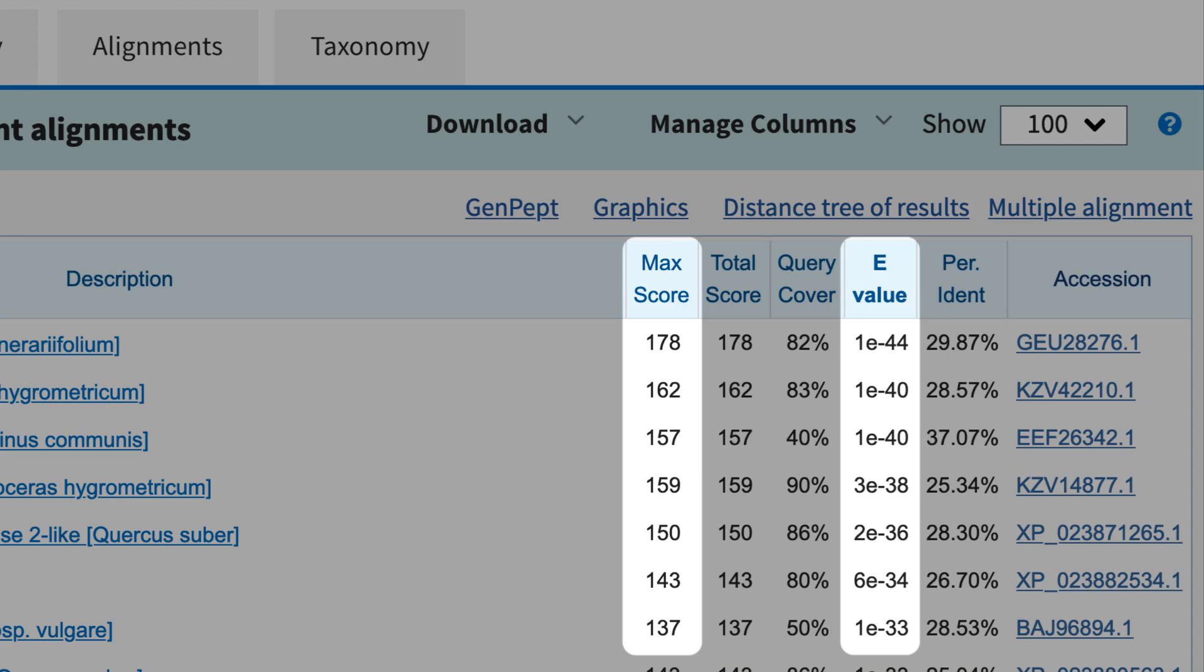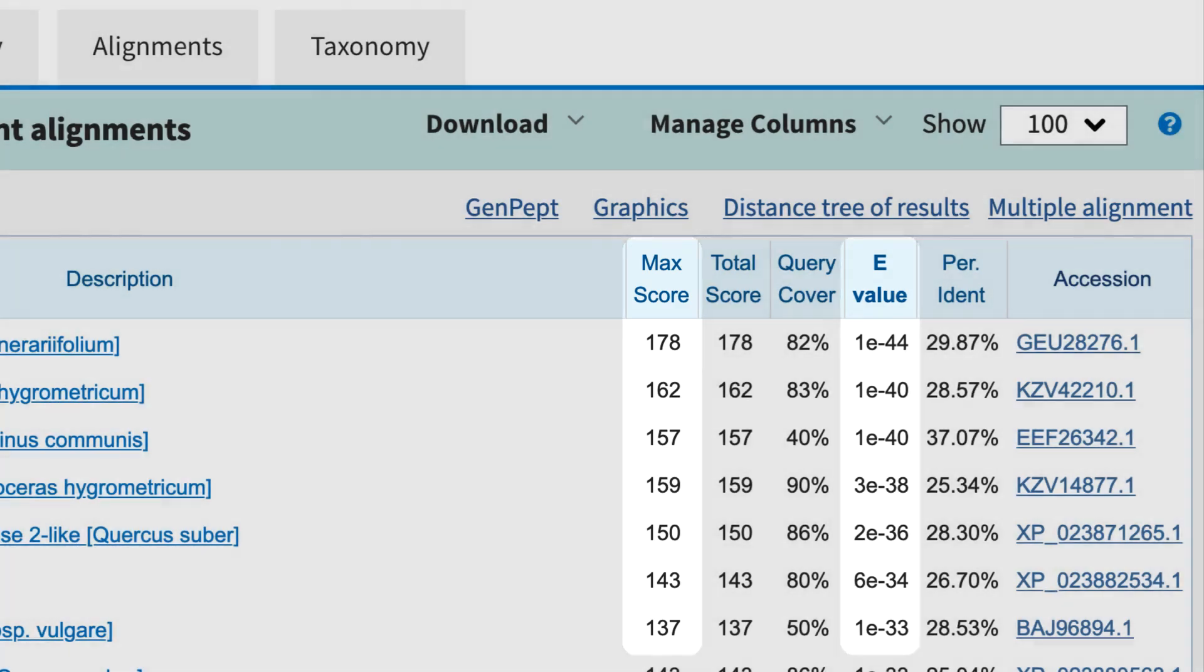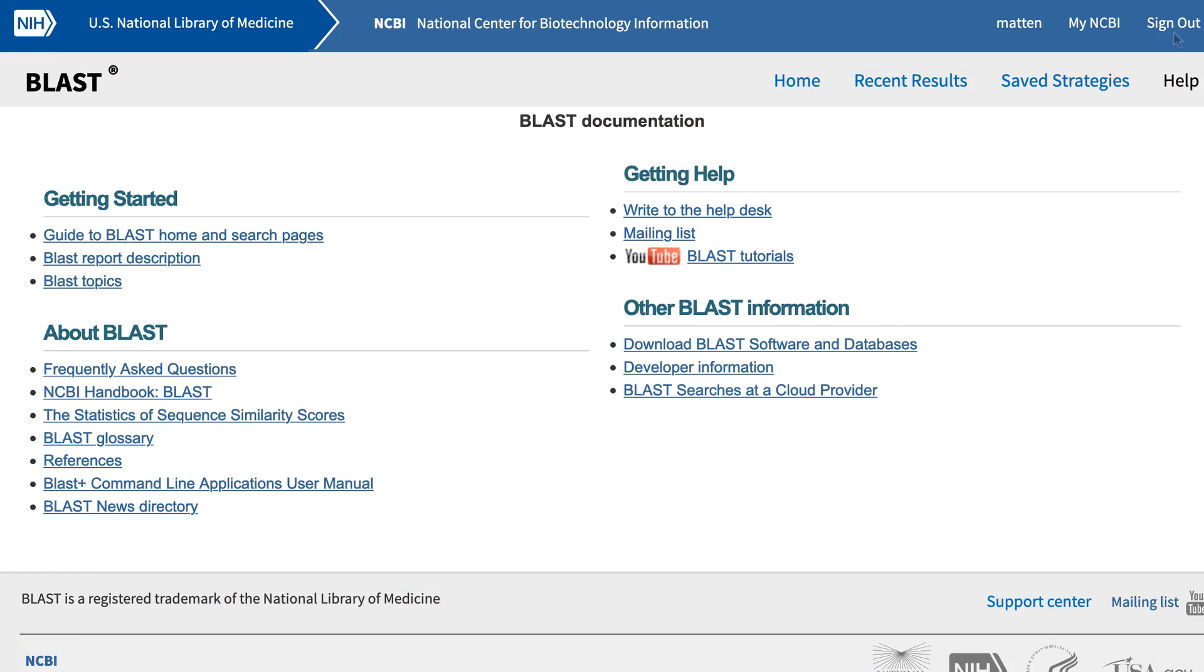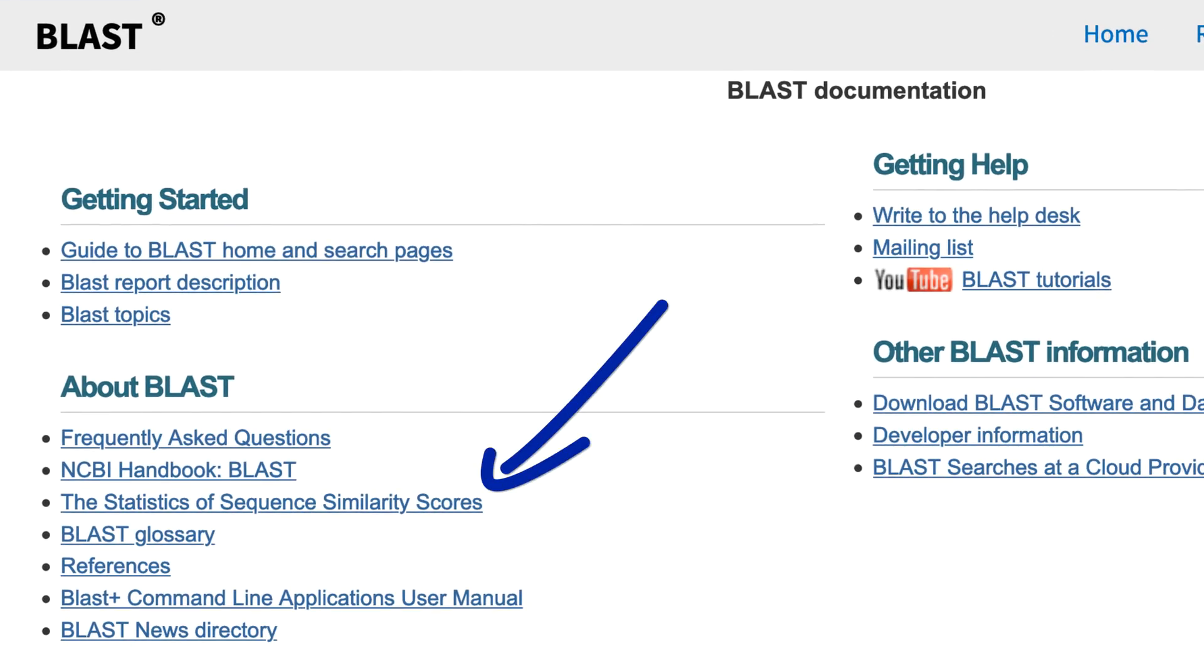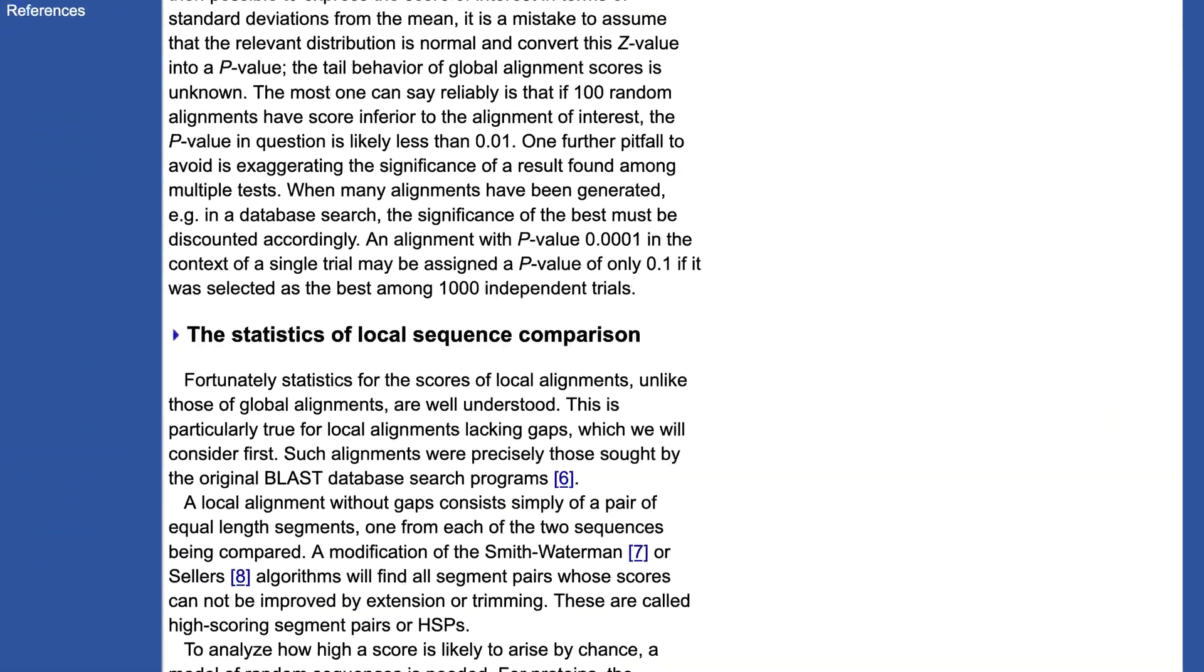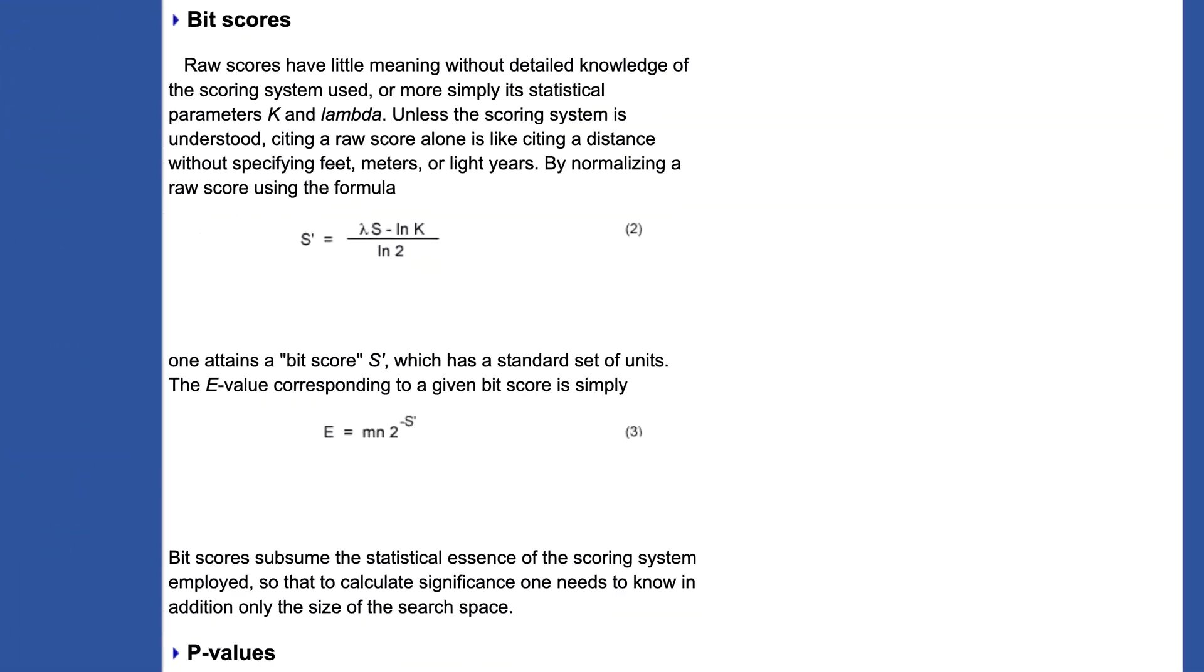It also makes sense if you think of E-Values as a false positive rate. Take a look at formula number three in the Statistics of Sequence Similarity Scores, which has a link on the BLAST help page. In addition to defining a normalized, or bit score,